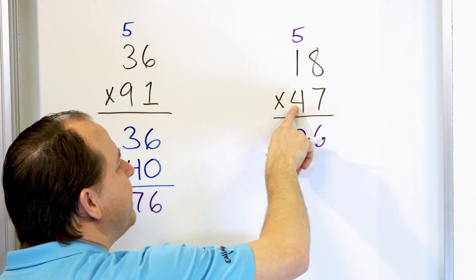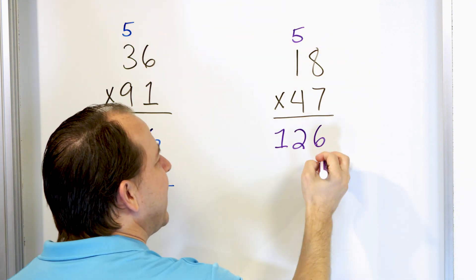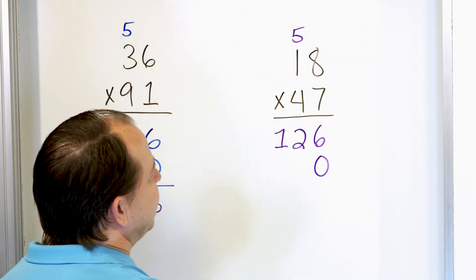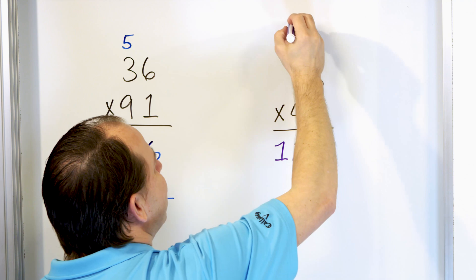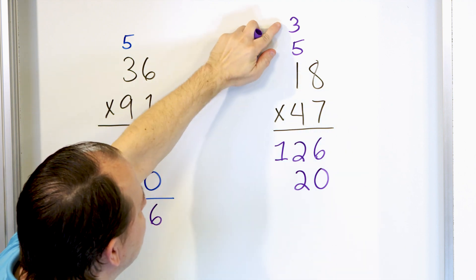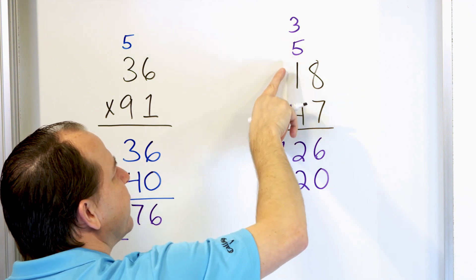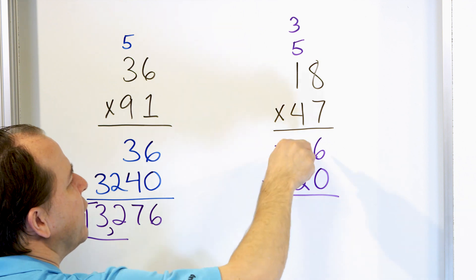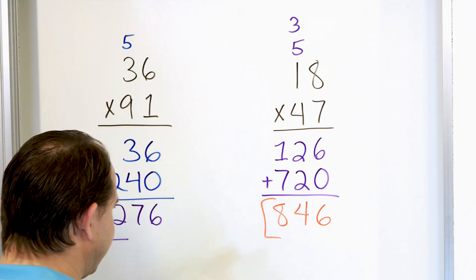Now we have to multiply by the four. This value of four is really 40 because it's 47, so when we go to the next digit we drop a zero there. Four times eight is 32 — put the two here and carry the three. Now four times one is four; we ignore the five from before, and four plus three is seven. Now we add: six plus zero is six, two plus two is four, one plus seven is eight. The answer is 846.